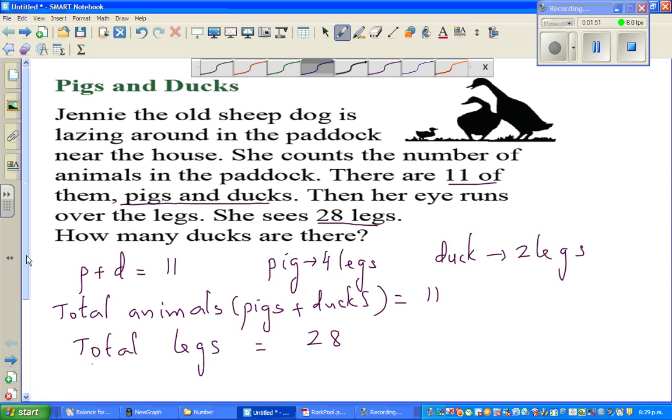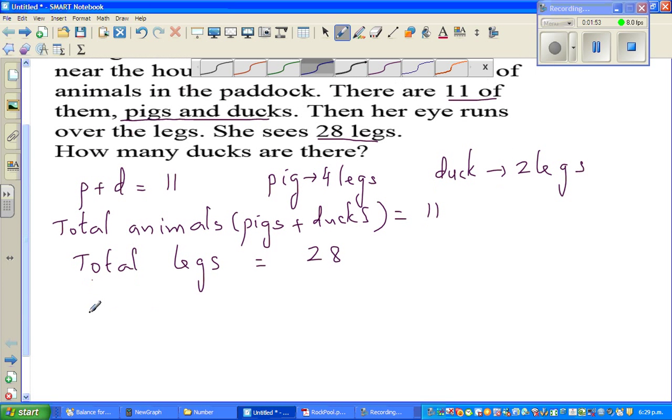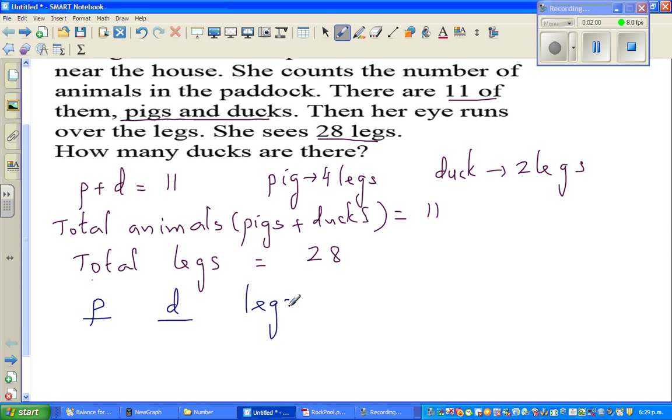So let us make up a table. It's always good to do it in a table form. So we have got pigs, you've got ducks, and you've got legs. One information that we have to know is pigs plus ducks should be 11.